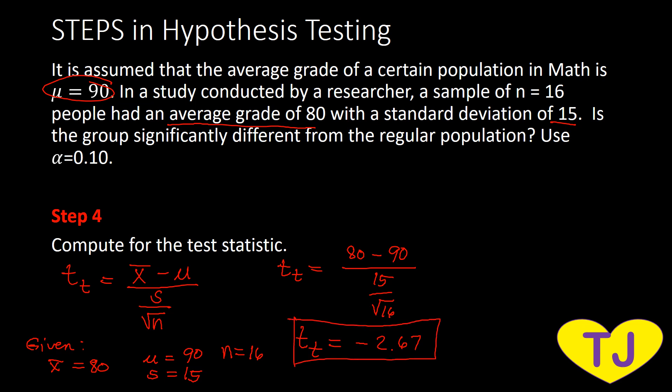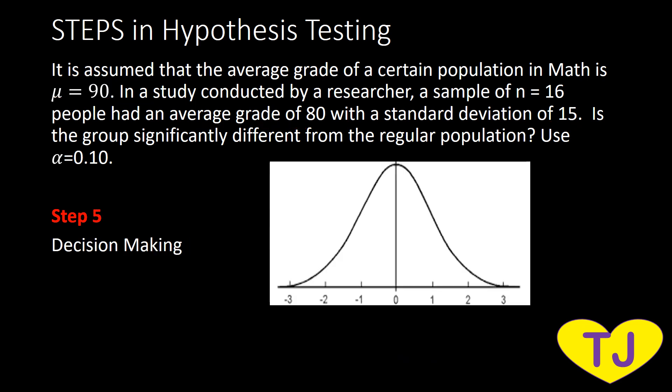Our T sub T is negative 2.67. We are now ready to decide based on that result and our critical value. Let's put them together on a single distribution curve. We have T sub C equal to positive and negative 1.753 as the critical values, and T sub T equal to negative 2.67 as the computed value for the test statistic.